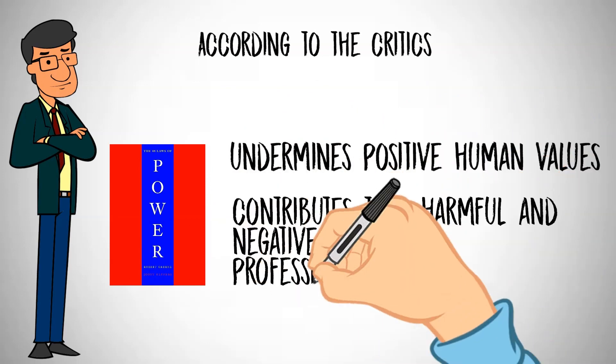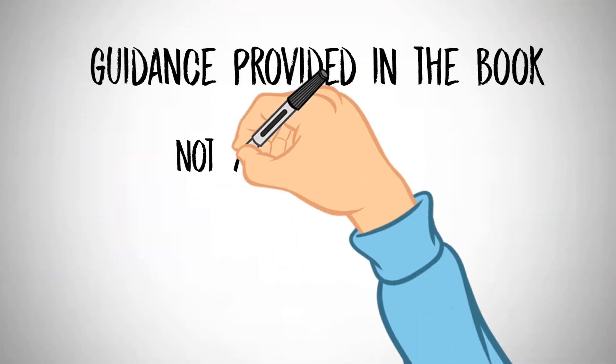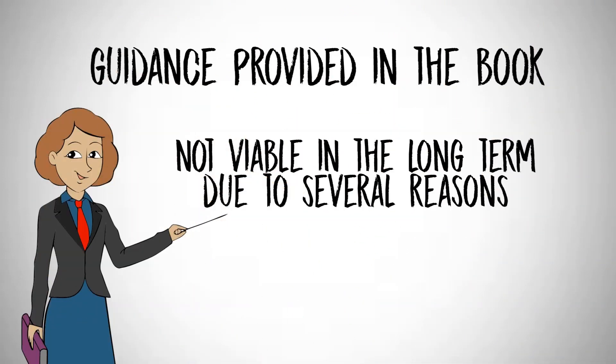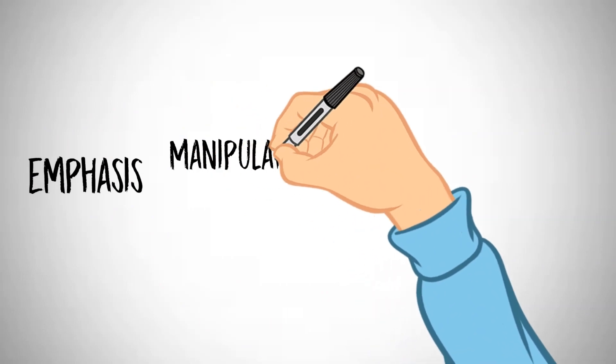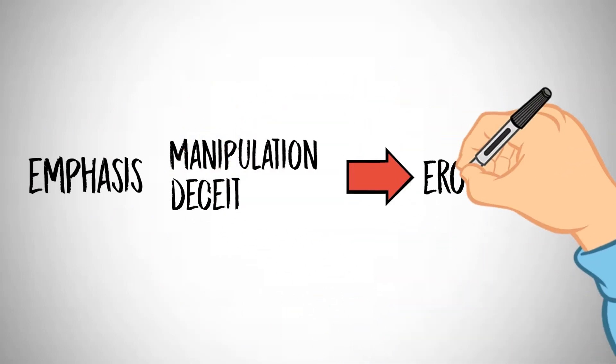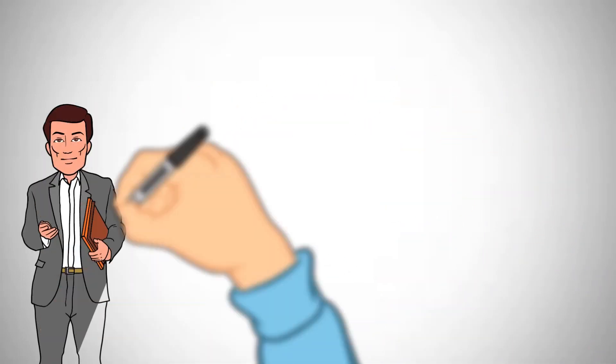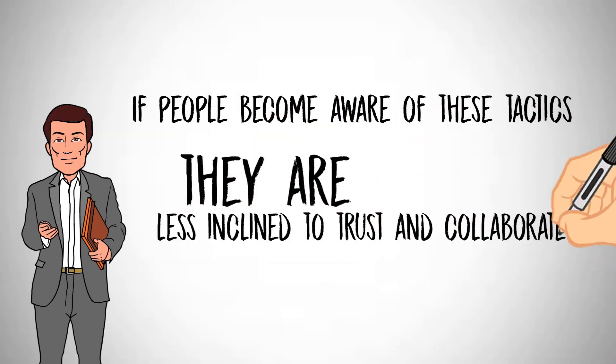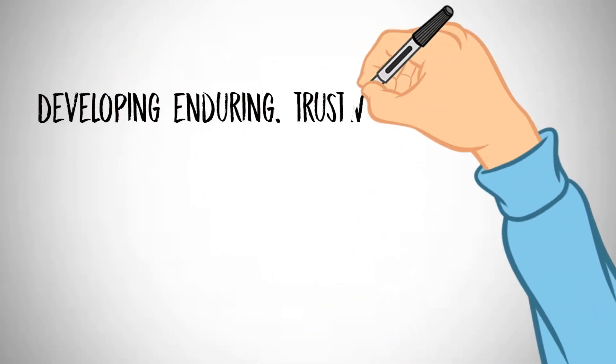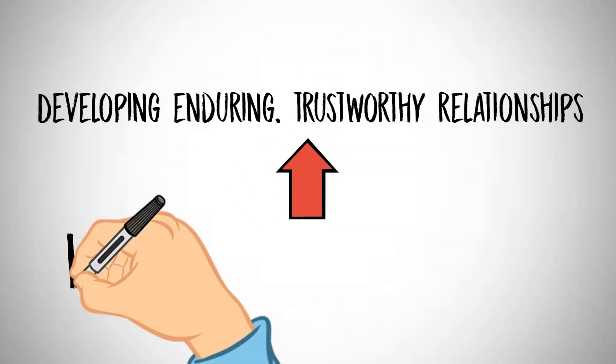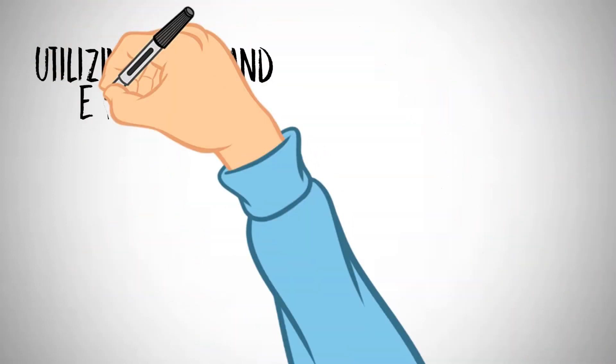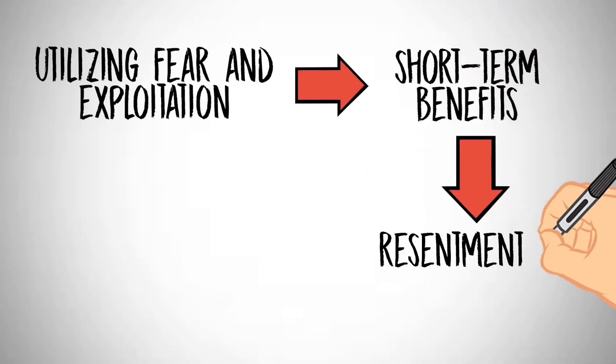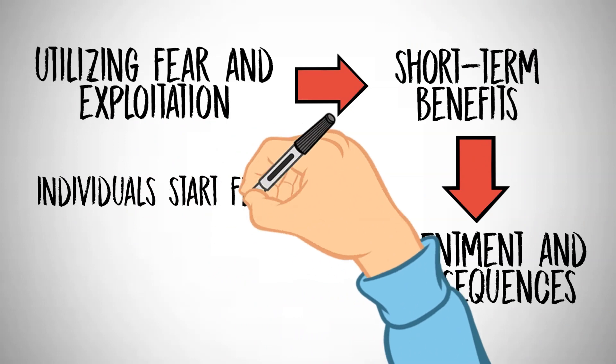Critics argue that this stance undermines positive human values and contributes to a harmful and negative social and professional atmosphere. The guidance provided in the book is commonly regarded as not viable in the long term due to several reasons. The book's emphasis on manipulation and deceit can gradually erode trust. If people become aware of these tactics, they are less inclined to trust or collaborate with you. Developing enduring trustworthy relationships necessitates honesty and openness.